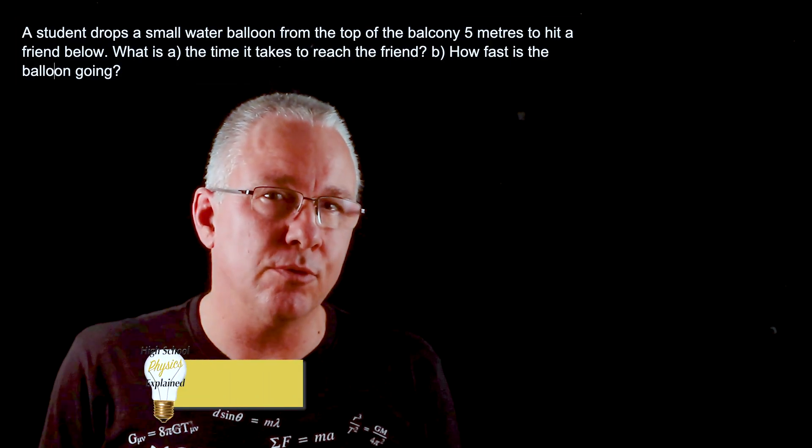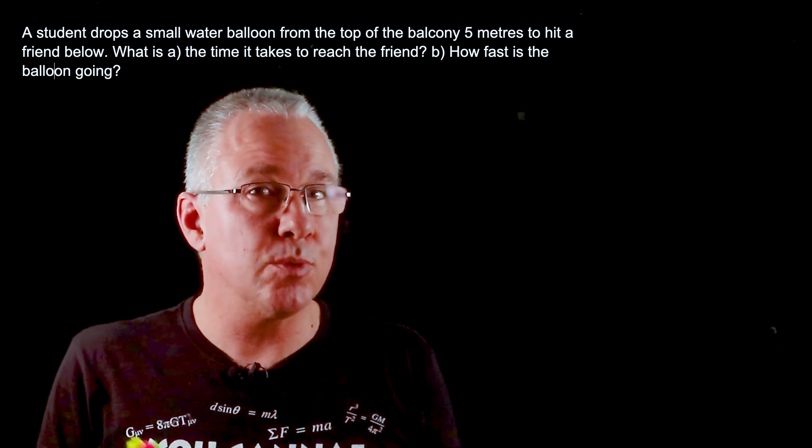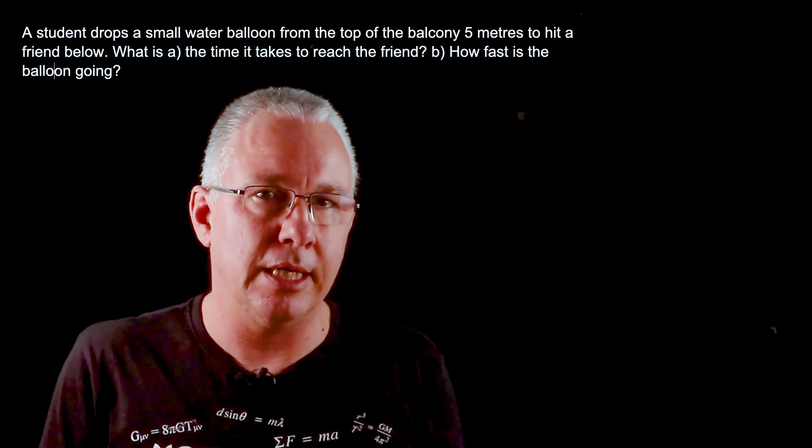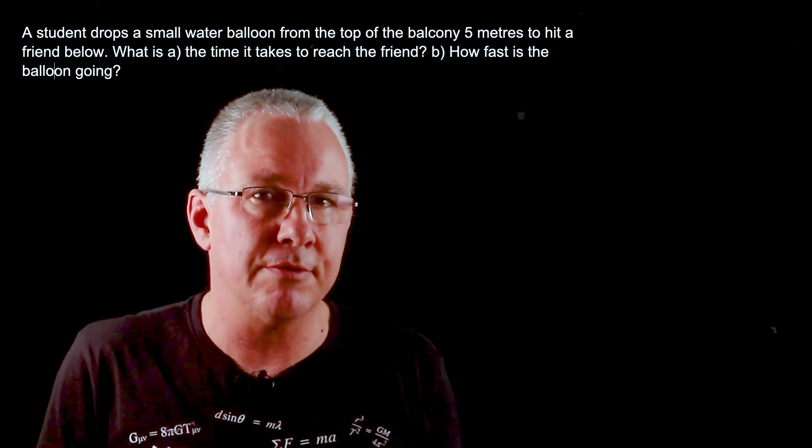Here is a relatively straightforward equations of motion problem. In this case, we're asked to work out two variables: the time for the balloon to hit the person below, and the velocity at which the balloon arrives.